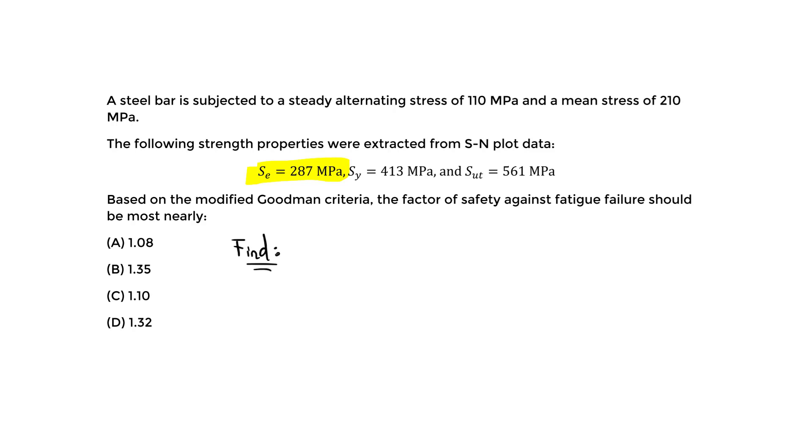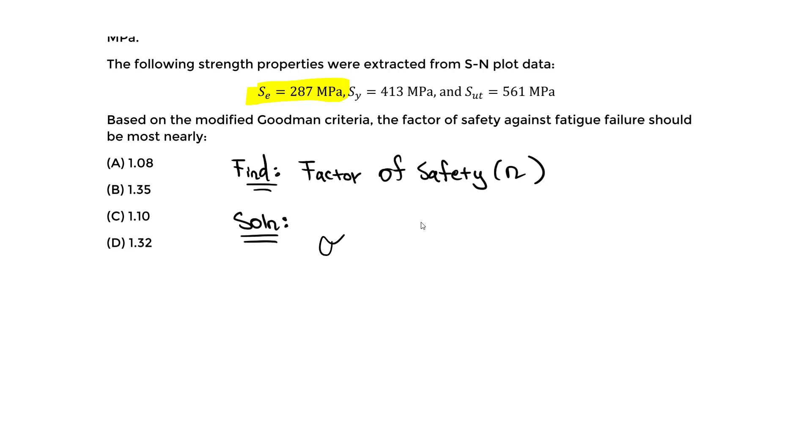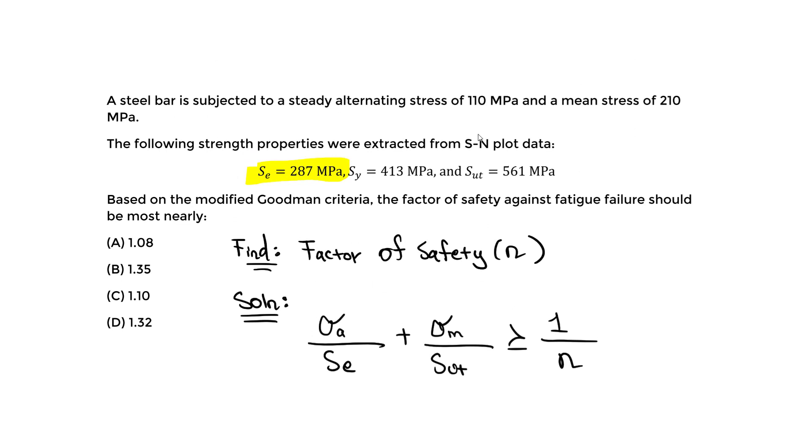We know in the handbook under variable loading on page 447, the modified Goodman is given. What we want to find is the factor of safety, so we have to make sure to use the equation that has that factor of safety, which is denoted by variable N. The modified Goodman criteria equation - make sure you use the one with the N variable. In the handbook it shows: sigma_a divided by SE plus sigma_m divided by S_ultimate greater than or equal to one over N.